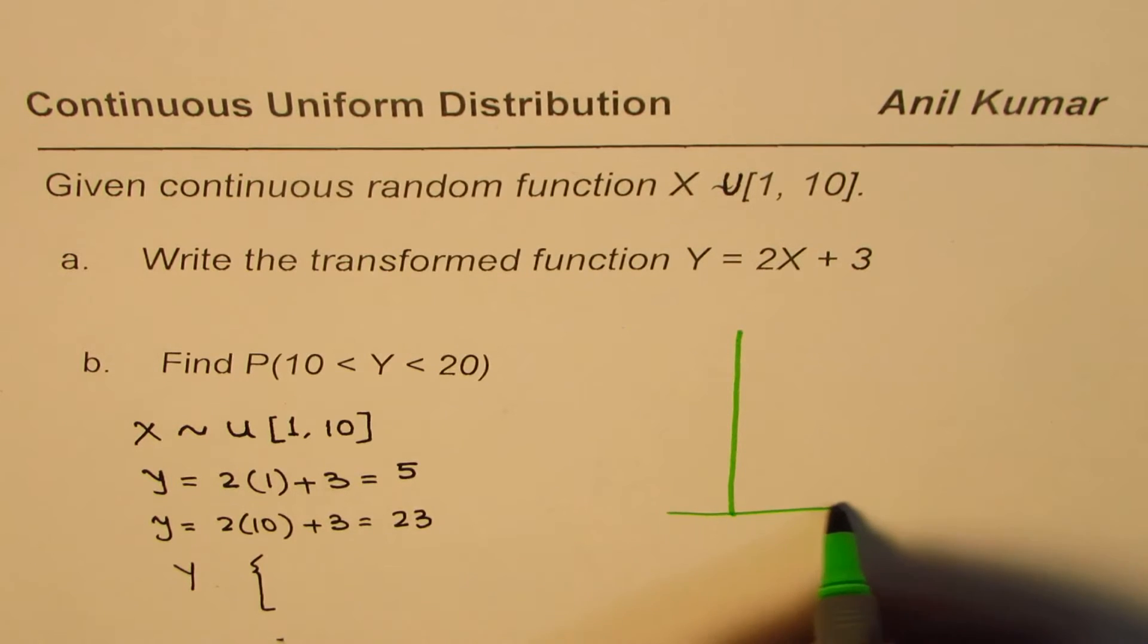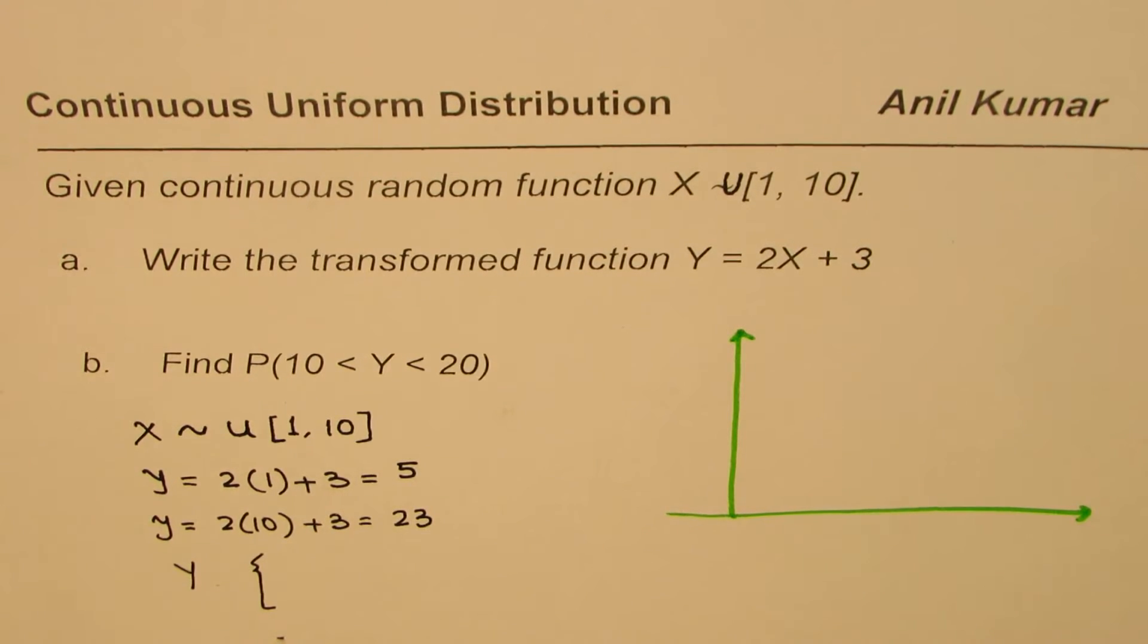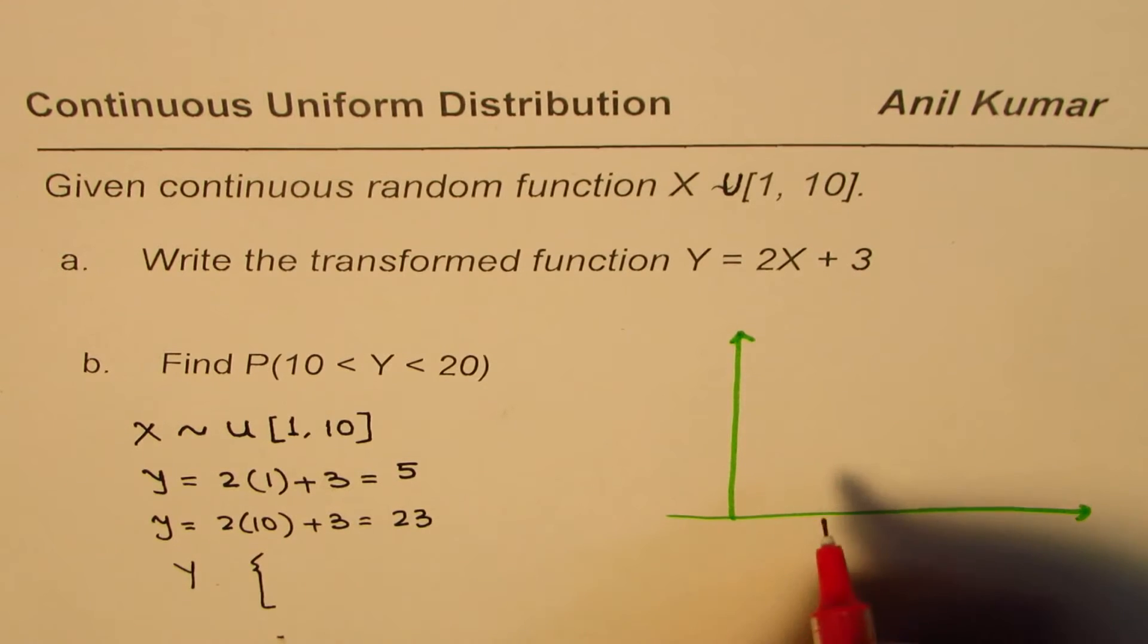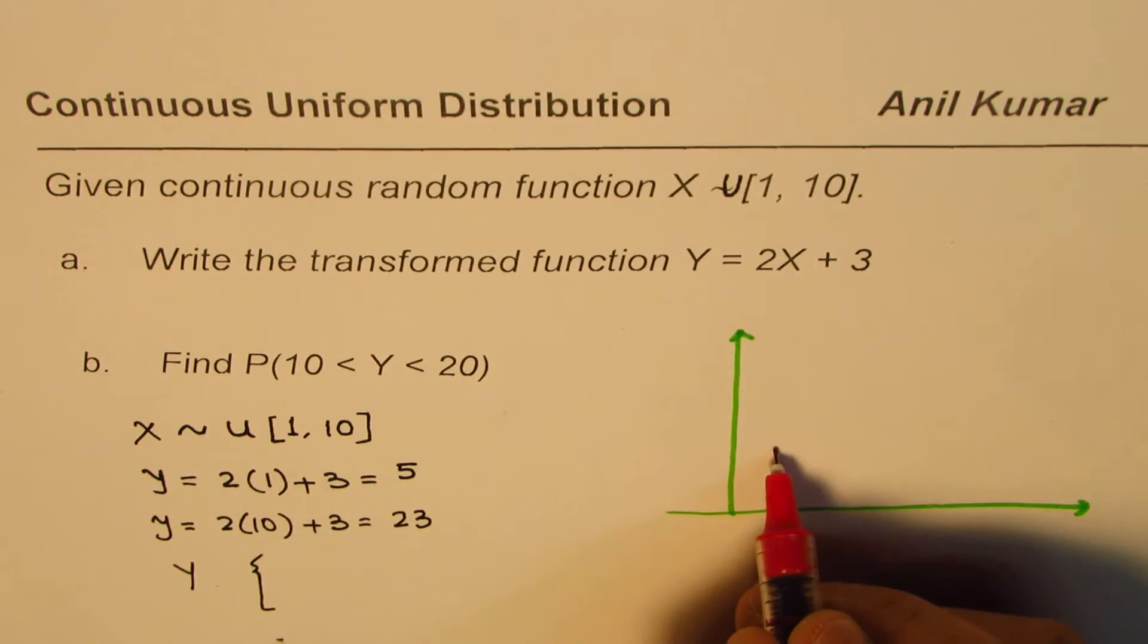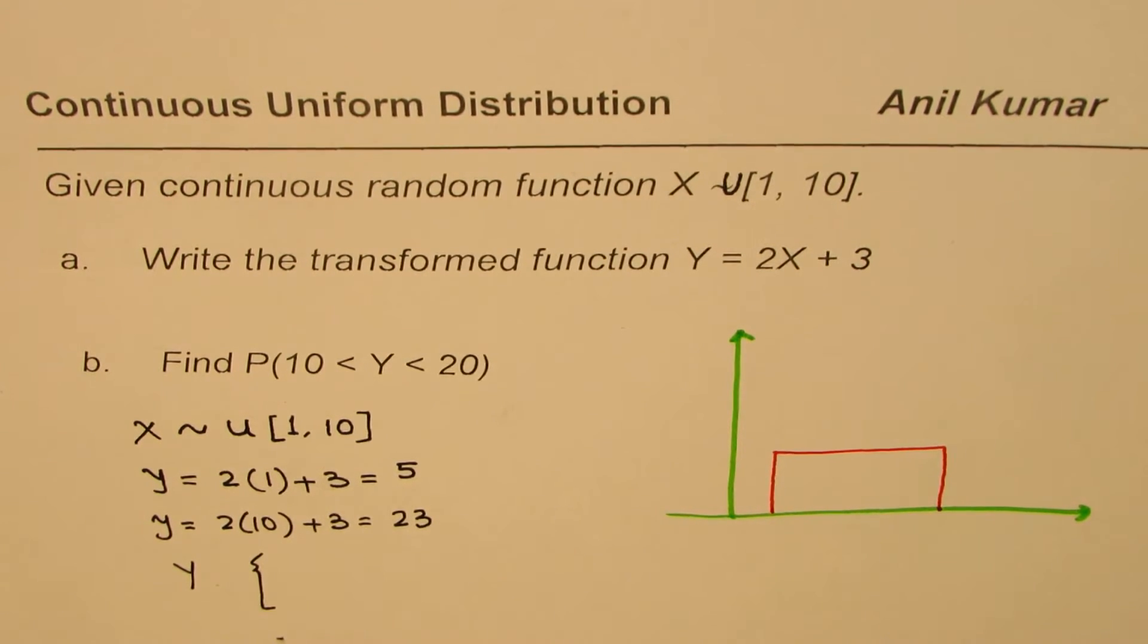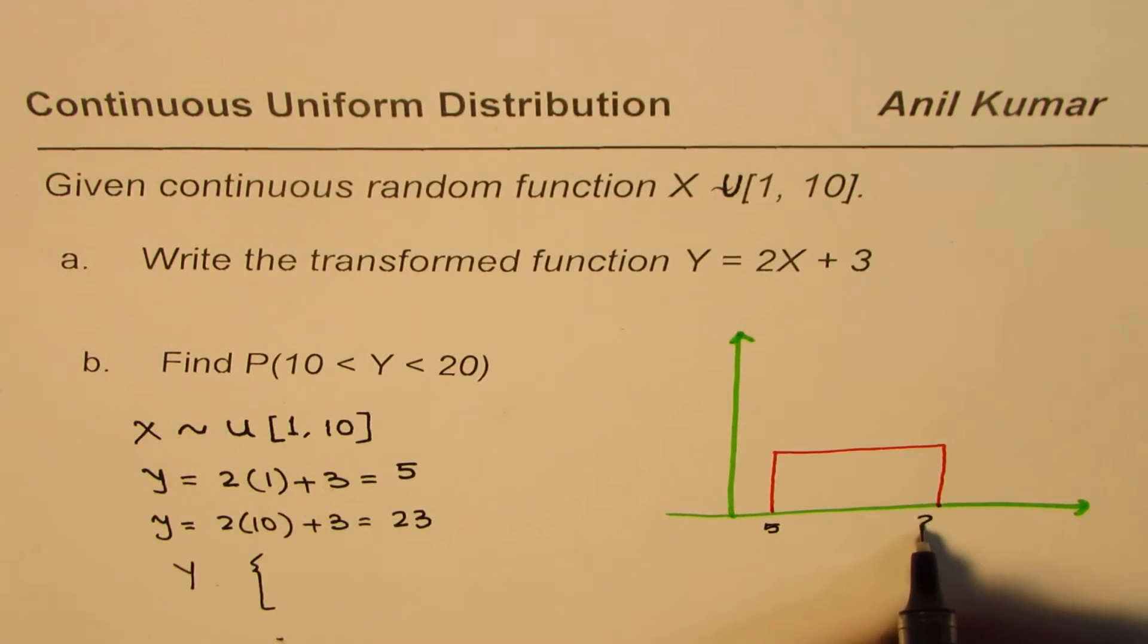So to find that out, let us kind of sketch and then see what it should be. So let me sketch it here. So what we are saying is that Y is defined between 5 and 23. Let us say this is 5 for us. So it is constant between 5 and 23, let us say that is 23 for us. So these values for us are 5 and 23.